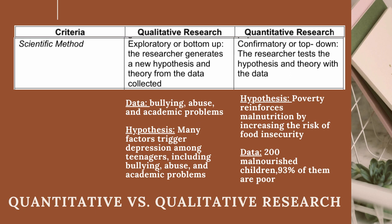Quantitative research method is confirmatory or top-down. The researcher tests the hypothesis and theory with the data. For example, the hypothesis is that poverty reinforces malnutrition by increasing the risk of food insecurity. Then you have the data of 200 malnourished children where 93% of them are poor.